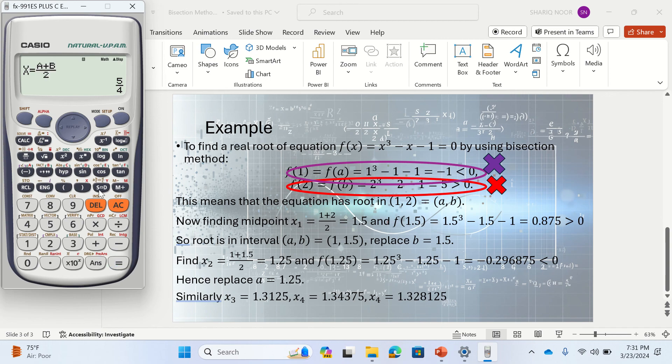So we simply see the next value is 5/4, which is 1.25. If we press equal, that will give you -0.296875. Now, this is negative, and the previous negative was at 1, that is A.